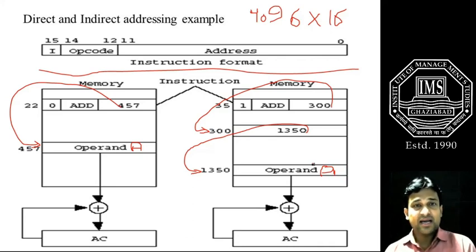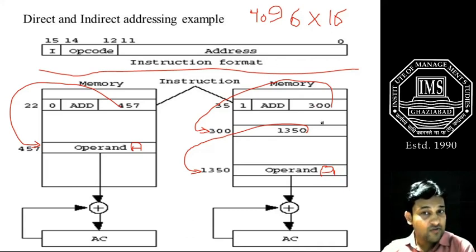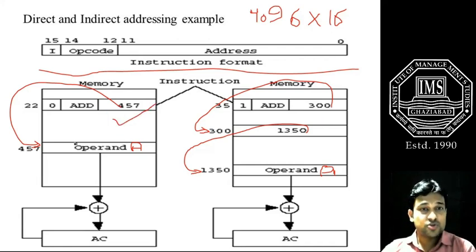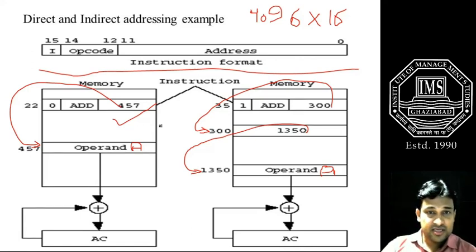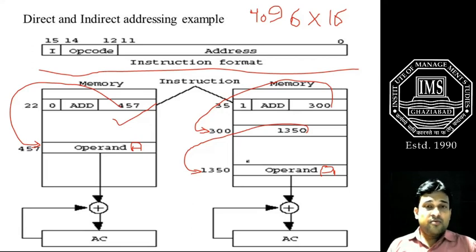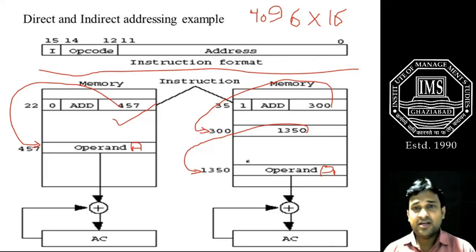With respect to indirect addressing, we are not getting the address of our operand directly in the address field of the instruction format, as we do in direct addressing. This is a particular example of direct addressing and this is the example of indirect addressing. By looking at these two comparatively, you can now clearly distinguish between the two.